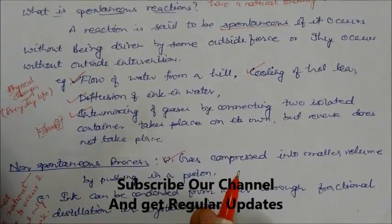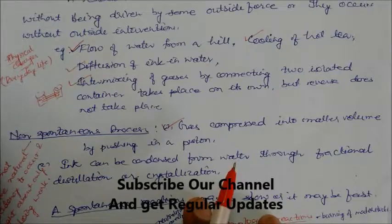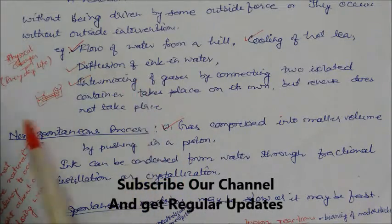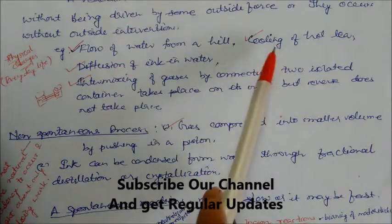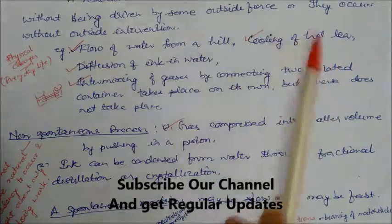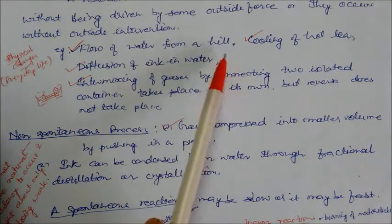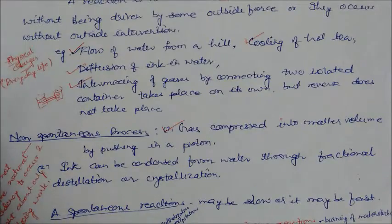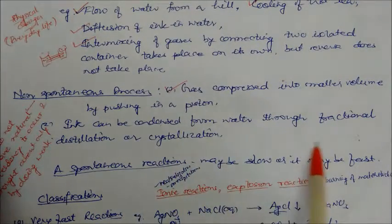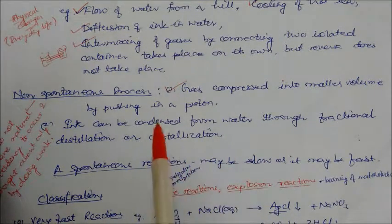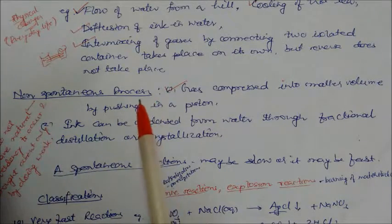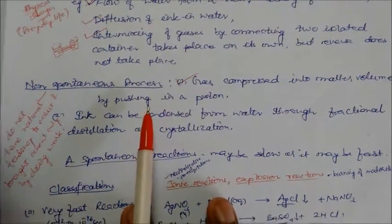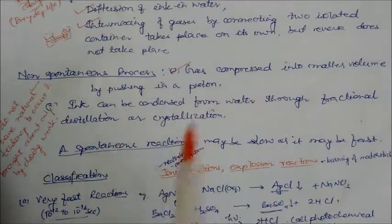Non-spontaneous processes require intervention. For example, compressing gas into a smaller volume by pushing a piston, or flowing water from downhill to uphill requires some engine or force. Making hot tea requires external energy. Ink can be separated from water through fractional distillation or crystallization. These non-spontaneous processes do not have a natural tendency to occur — they require some external agency. We are concerned only with spontaneous reactions, not non-spontaneous reactions.